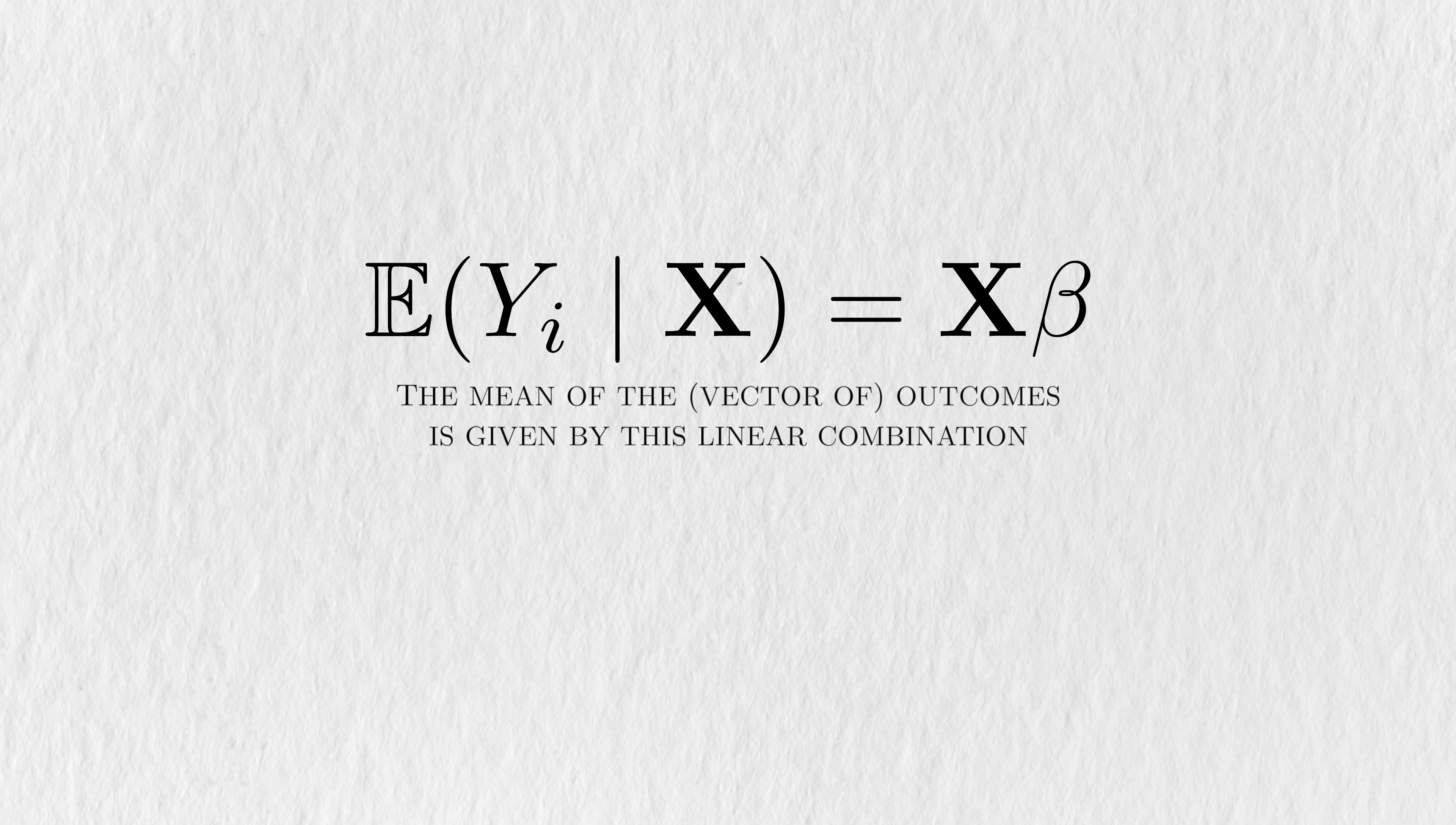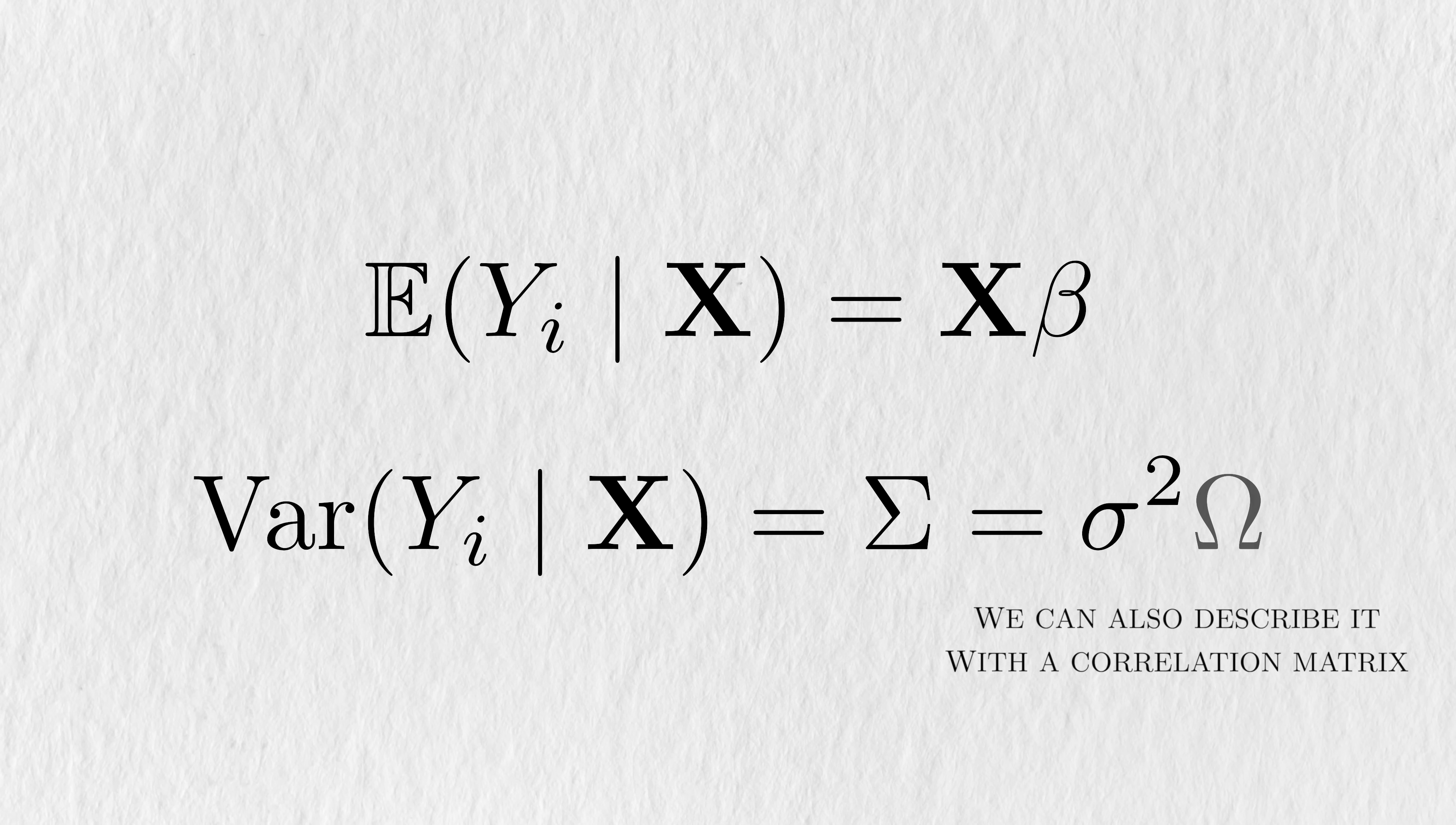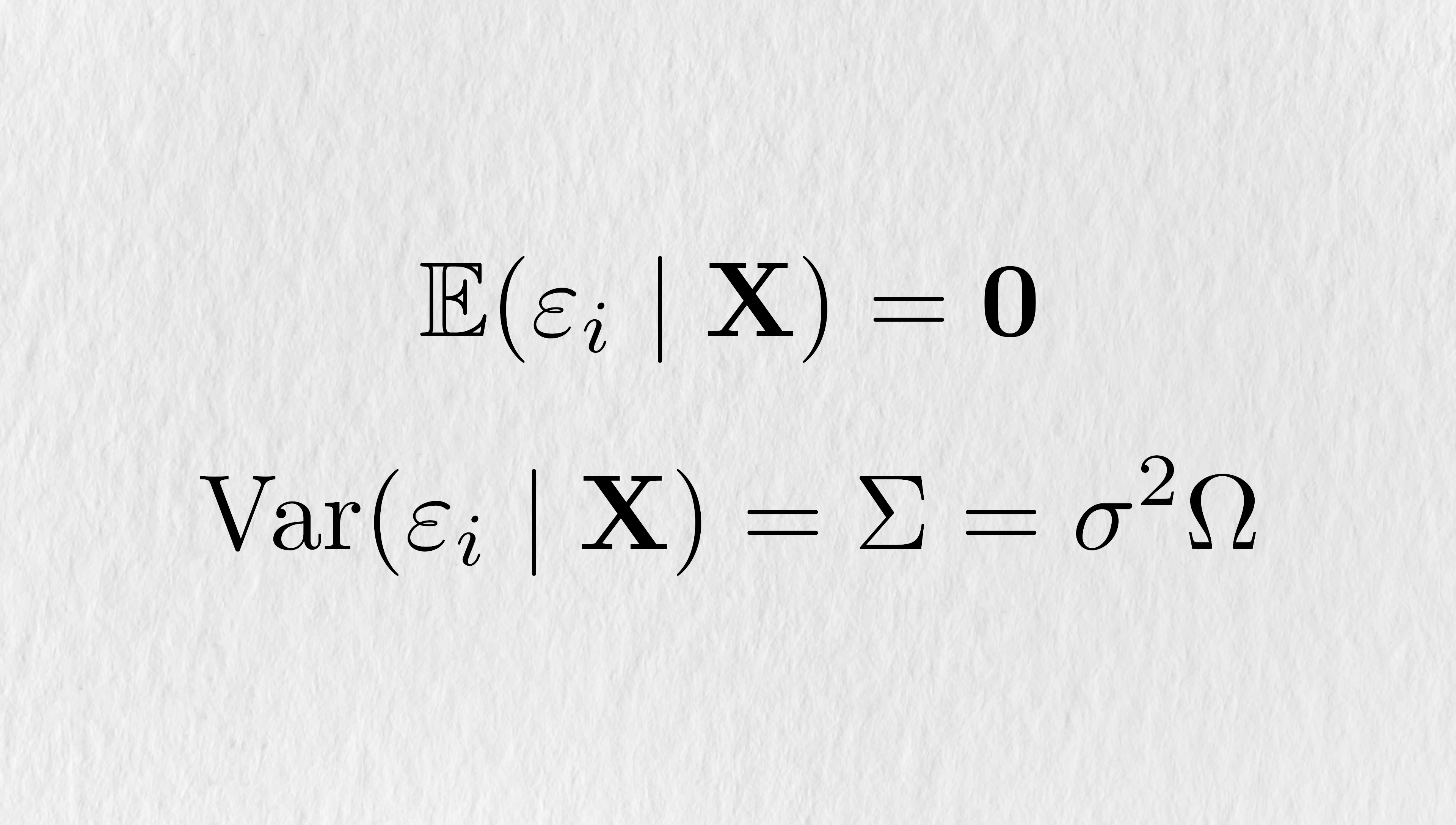It states that the expected value of a vector of outcomes across time is given by this linear combination of parameters, and that the covariance matrix of this vector is given by some matrix sigma. Equivalently, we could also talk about the covariance matrix in terms of a correlation matrix, since correlation is just normalized covariance. Similar to the OLS estimators, we can talk about the GLS model in terms of the errors. The expected value of the error vector would be zero, and their covariance matrix would be the same sigma. Based on this notation, you can see that ordinary least squares is just a special case of generalized least squares, where the correlation matrix is just the identity matrix.